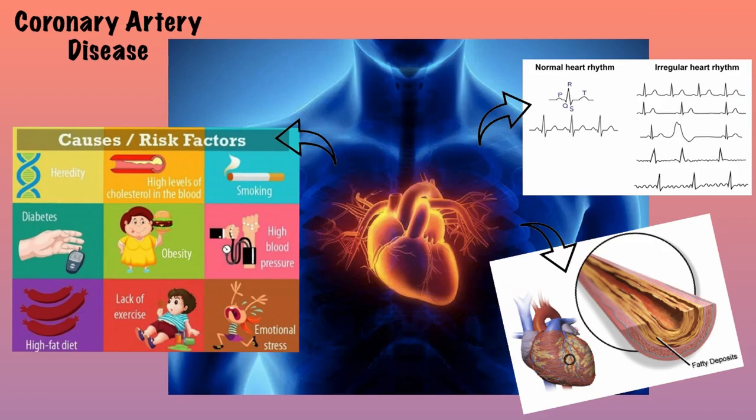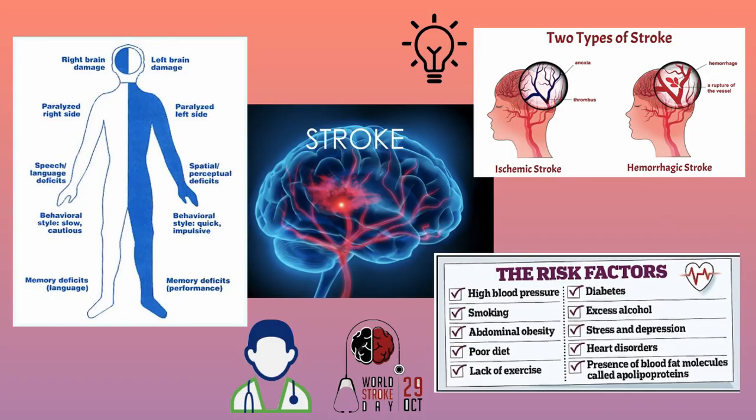A stroke is another deadly disease, which occurs when an artery in your brain is blocked or leaks. Thus there are two types: ischemic stroke or hemorrhagic stroke. This causes the oxygen-deprived brain cells to begin dying within minutes. During a stroke, you feel sudden numbness and confusion or have trouble walking and seeing. And if left untreated, a stroke can cause long-term disability.